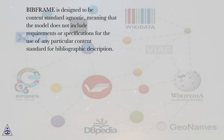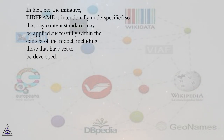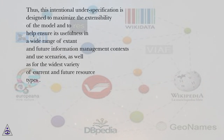BIBFRAME is designed to be content standard agnostic, meaning that the model does not include requirements or specifications for the use of any particular content standard for bibliographic description. In fact, per the initiative, BIBFRAME is intentionally underspecified so that any content standard may be applied successfully within the context of the model, including those that have yet to be developed. Thus, this intentional underspecification is designed to maximize the extensibility of the model and to help ensure its usefulness in a wide range of extant and future information management contexts and use scenarios, as well as for the widest variety of current and future resource types.